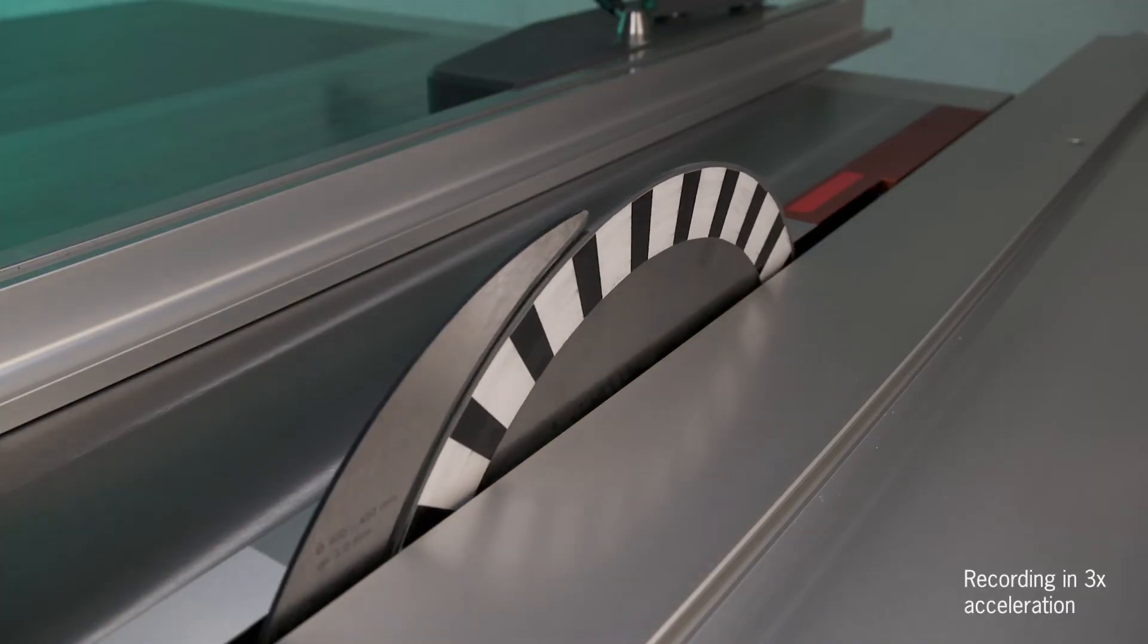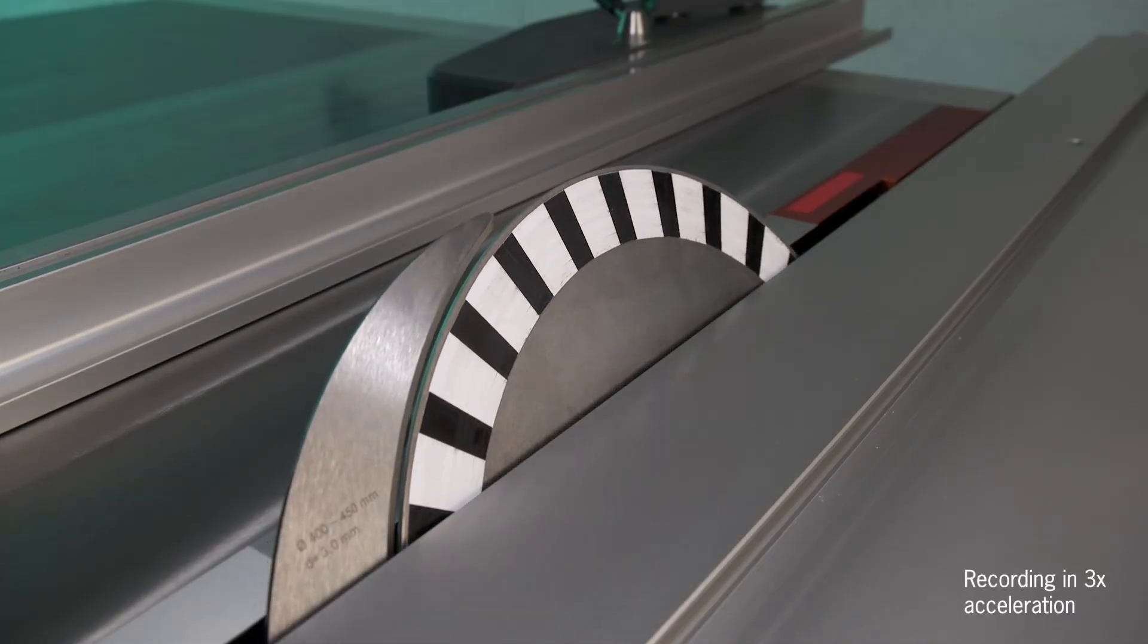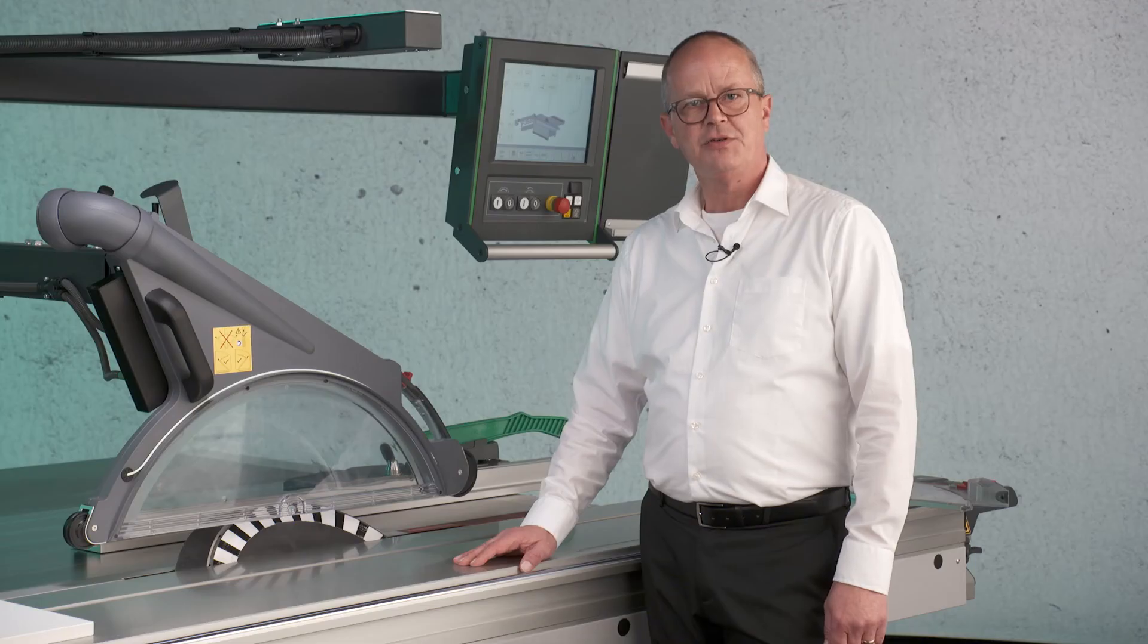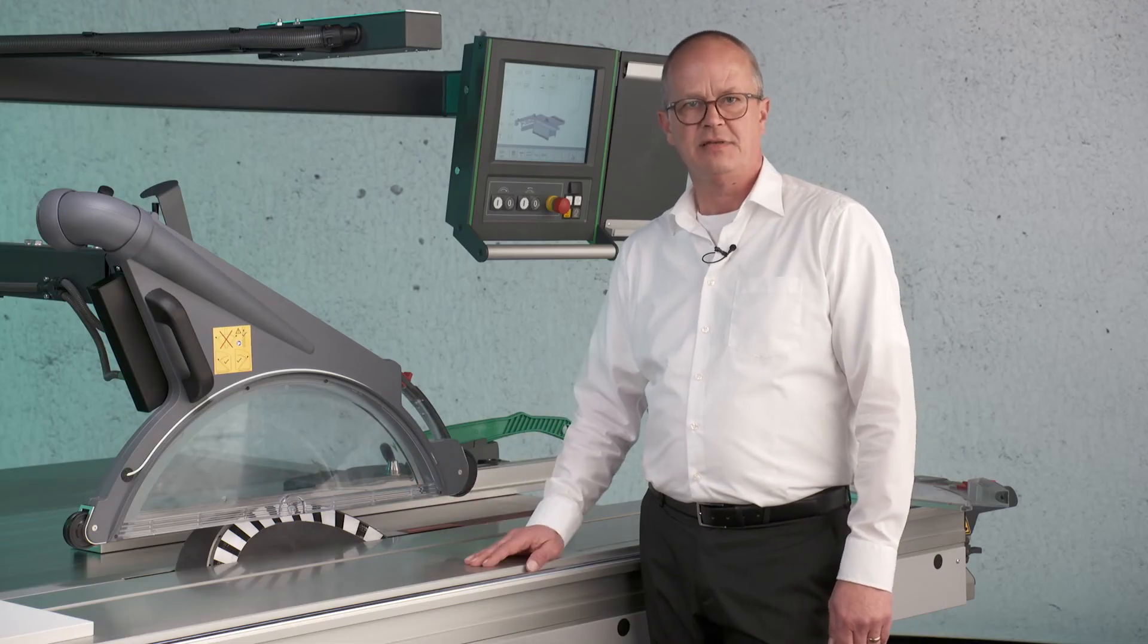If you decide for a two-way tilt machine, the hands of your workers are also protected when the saw blade is tilting to the sliding table side.